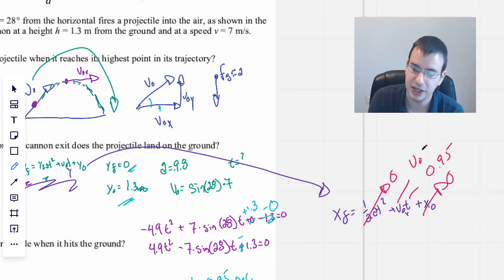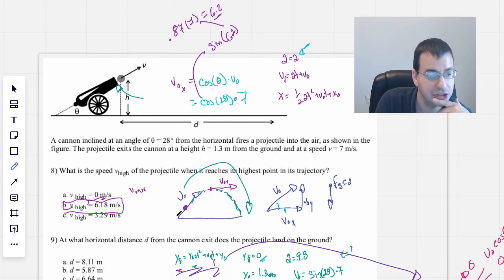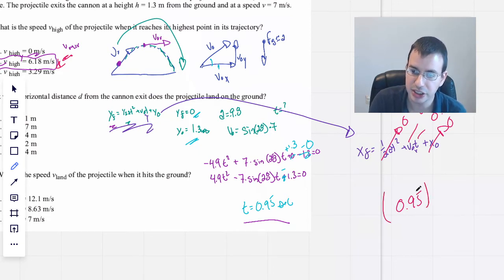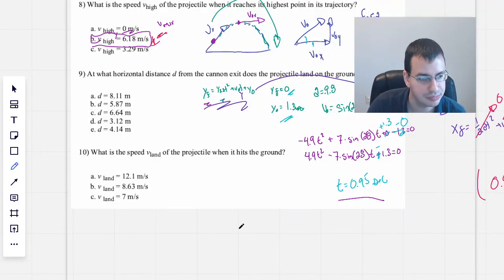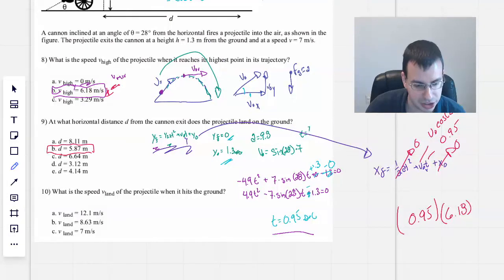x final equals one half at squared plus v naught t. Acceleration equals zero, so that whole term equals zero. x naught equals zero, so that equals zero. We know that t is 0.95, and then v naught x will be v naught times cosine of 28, which we already knew the answer for, like 6.18.